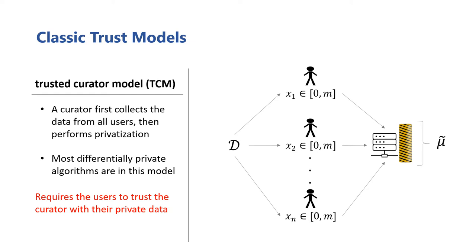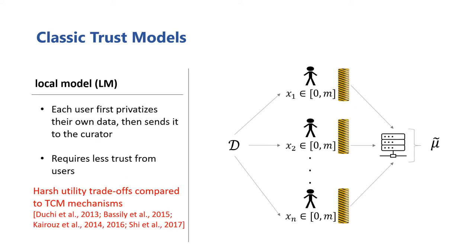Because of this, it's been one of the most studied trust models in differential privacy, and most differentially private mechanisms have been designed to be used within it. However, it has one major and obvious drawback: users have to actually trust the curator with handling their unprivatized data, and also trust that the curator will perform the privatization properly. One way to address this drawback is to use the other classic trust model, the local model.